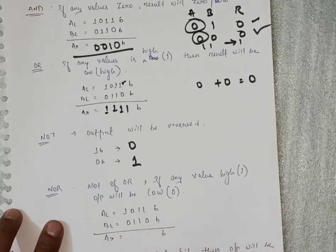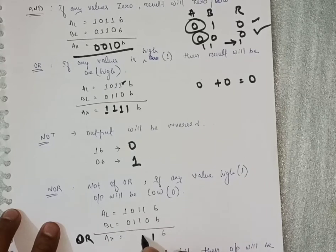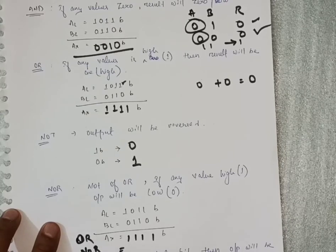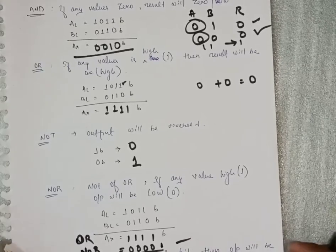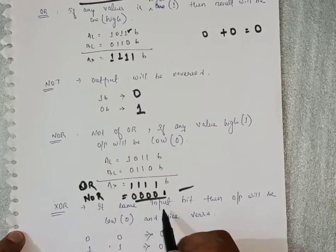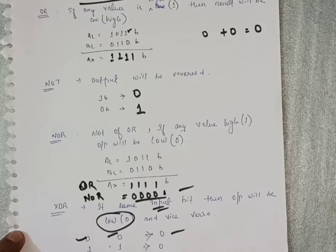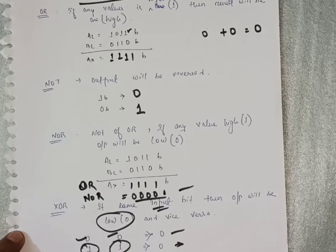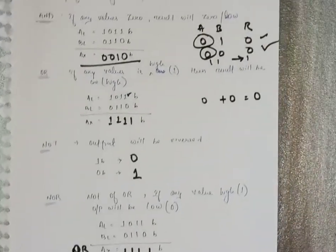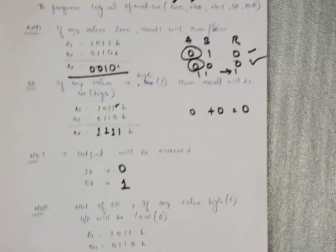For example, performing OR first: 1,1 → 1, 1,1 → 1. Then applying NOR (NOT of that result), all ones become zeros. For XOR: if both input bits are the same (0,0 or 1,1), the output is 0. If the inputs are different (0,1 or 1,0), the output is 1. The next instruction set will be covered in our next class. Thank you for watching — please like, share, and subscribe to our YouTube channel.